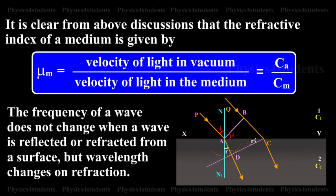It is clear from the above discussions that the refractive index of a medium is given by mu m is equal to velocity of light in vacuum divided by velocity of light in the medium, is equal to Ca by Cm. The frequency of a wave does not change when a wave is reflected or refracted from a surface, but wavelength changes on refraction.